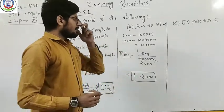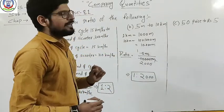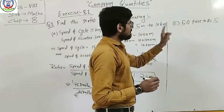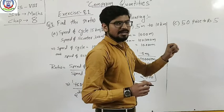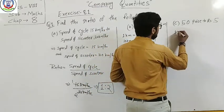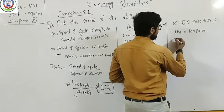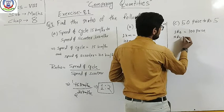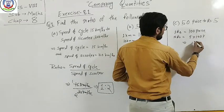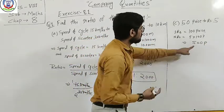The last question is 50 paise to 5 rupees. Again, we have different units here—paise and rupees. One rupee equals 100 paise, so 5 rupees equals 5 multiplied by 100 paise, that is 500 paise. Now we have the same units.